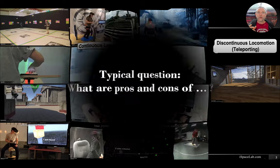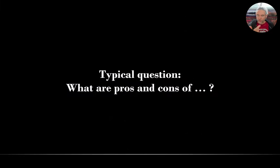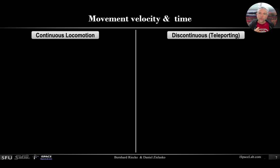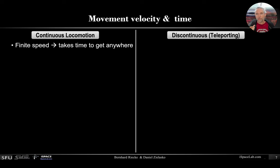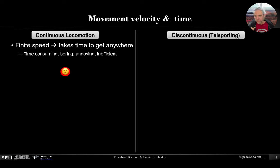The typical question that is often asked is: what are the pros and cons of the different technologies, and which one should we use? The way this often goes is we analyze continuous with discontinuous locomotion, for example in terms of movement time. We know that continuous locomotion, by definition, has a finite speed, so it really takes some time to get anywhere. This can be time-consuming, boring, annoying, and inefficient, so this is often seen as a disadvantage.